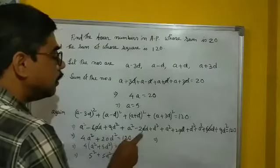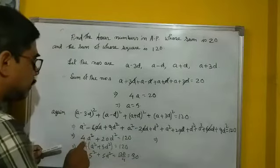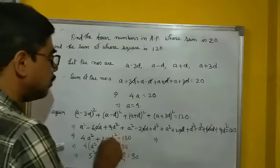Twice AD, and that twice AD cancel. After that we get 4A square plus 20D square.